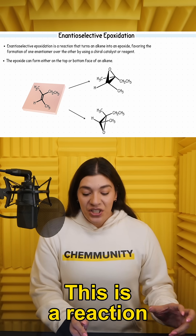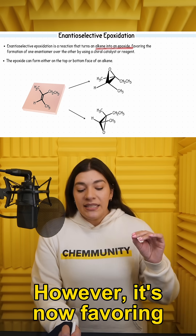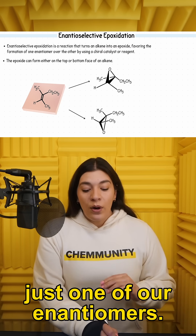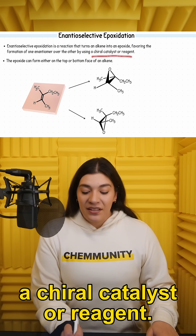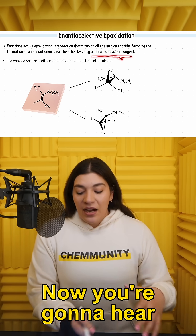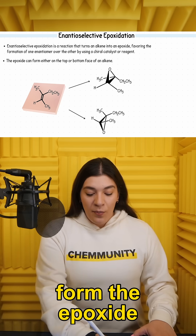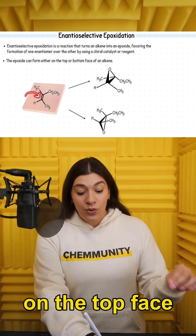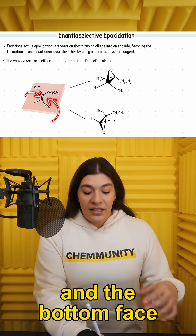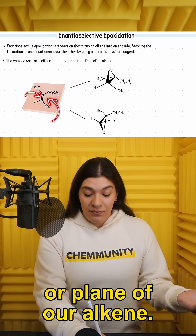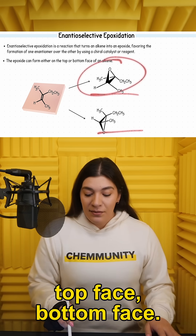This is a reaction that still turns an alkene into an epoxide. However, it's now favoring just one of our enantiomers. It's doing this by using a chiral catalyst or reagent. You're going to hear this described as forming the epoxide on the top face or top plane of our alkene, and the bottom face or plane of our alkene — top face, bottom face.